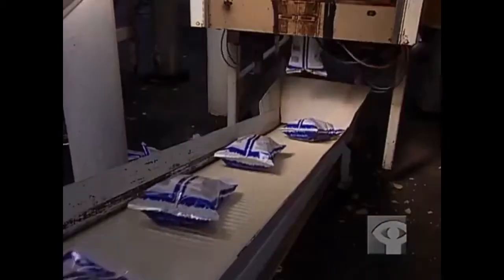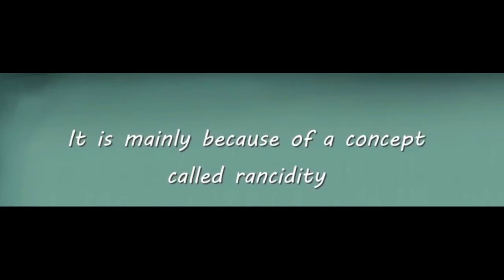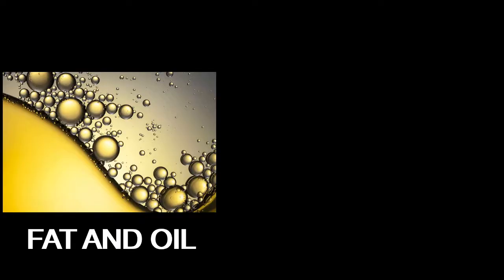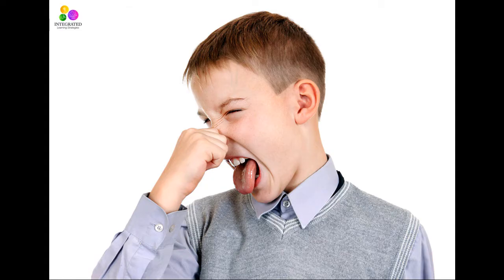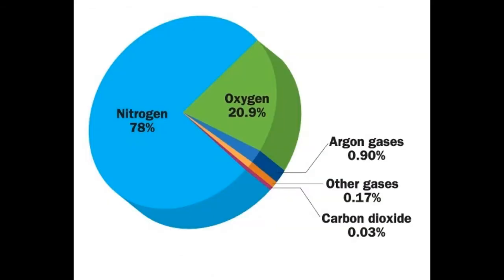We can talk about nitrogen gas in the chips. We can talk about this because we think we can tell rancidity. We already know rancidity is going to occur. It's going to react with oxygen, and the nitrogen gas will react with a preservative, which will be a good thing. So nitrogen gas will be a good thing — it will help preserve the chips. This is why we use nitrogen gas in the chips packet.